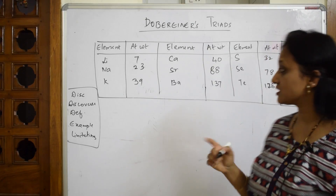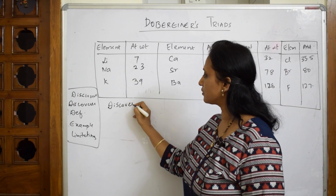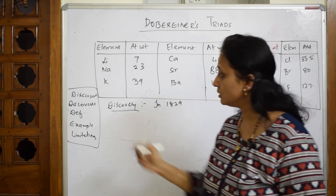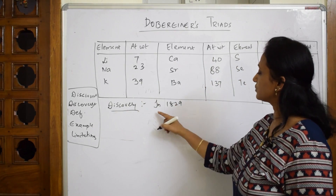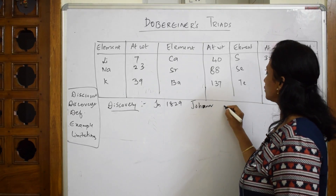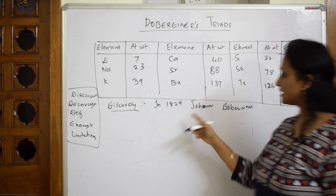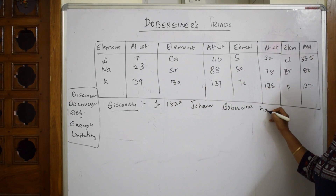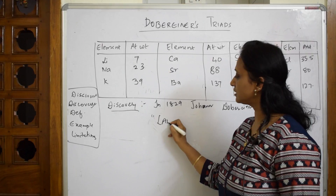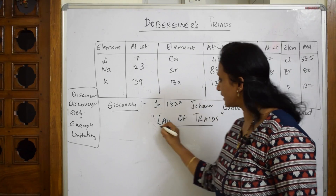Now, for Dobereiner's Triads, I need to write the discovery part. This was basically discovered in 1829. The discovery was made by John Dobereiner. So in 1829, John Dobereiner discovered what is called — write it in inverted commas — the Law of Triads. Underline this.